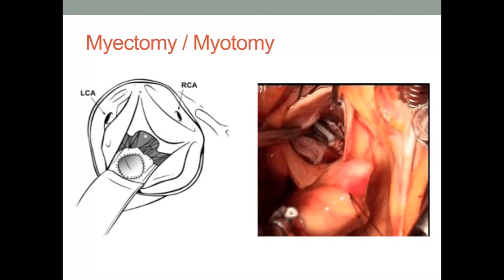In instances where preoperative evaluation has also revealed subaortic narrowing or obstruction, a concomitant myotomy or myectomy in addition to aortic valve replacement may be an option for an anatomically and physiologically adequate left ventricular outflow tract. Exposure is obtained via either an aortotomy or via complete transection of the ascending aorta. The coronary artery ostia are then well defined to avoid any iatrogenic injury. In addition, the valve leaflets, commissures, and area of the presumed conduction system are also well identified and protected during the process of myectomy or myotomy.